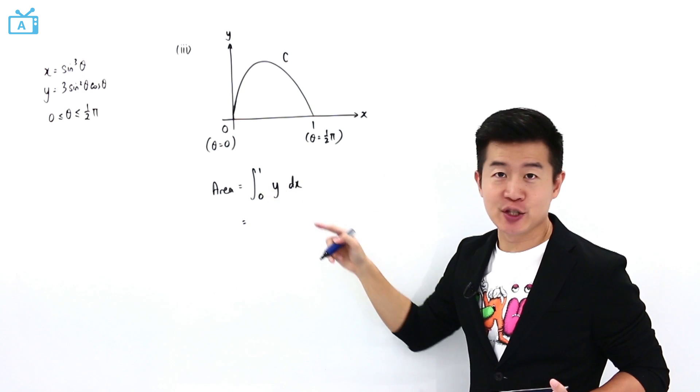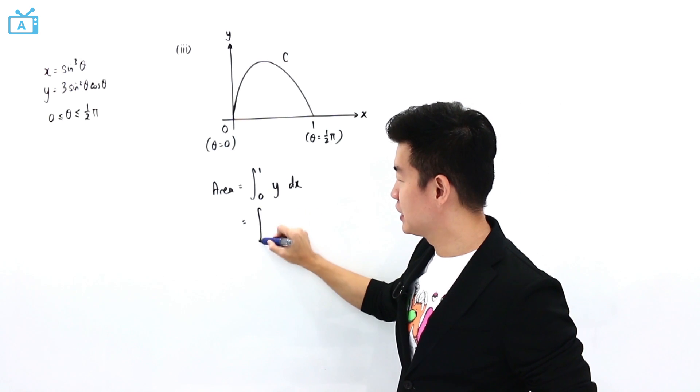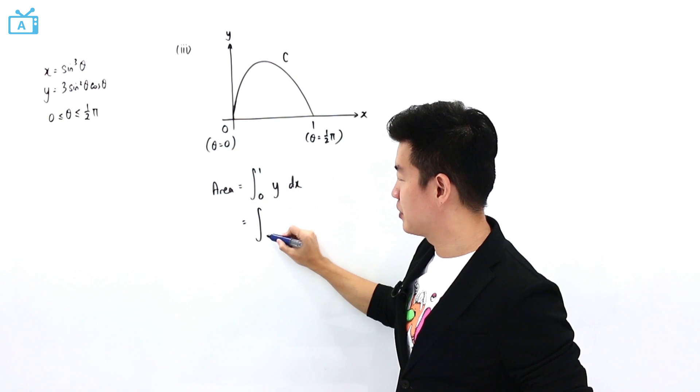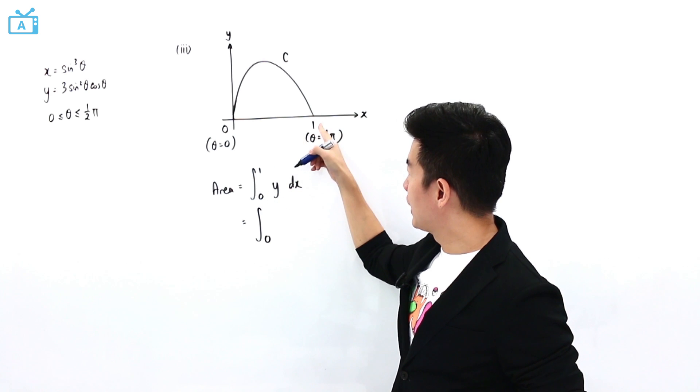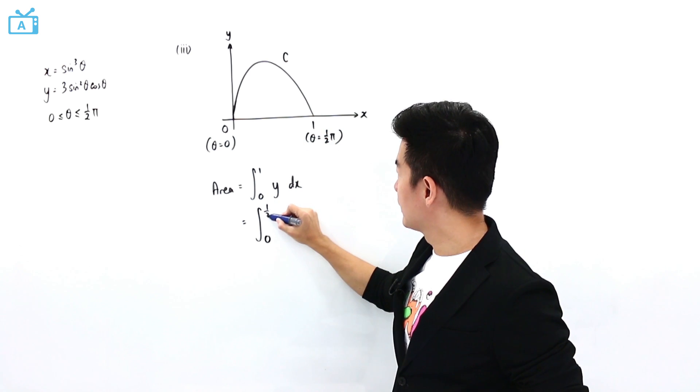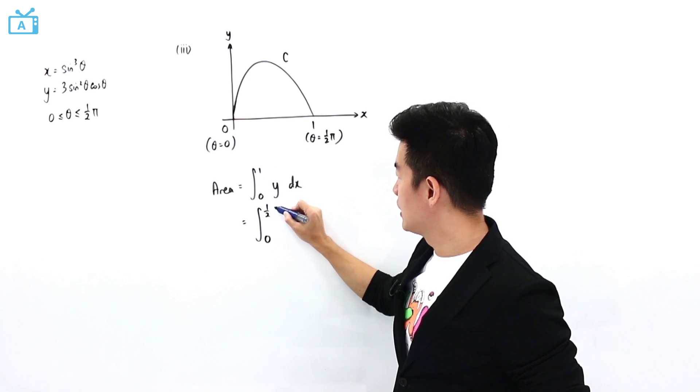And if I were to try to change this into a parametric form, it is going to be integration from 0, which is going to be replaced by theta equals 0. When x equals 1, it is going to be replaced by when theta equals half pi.